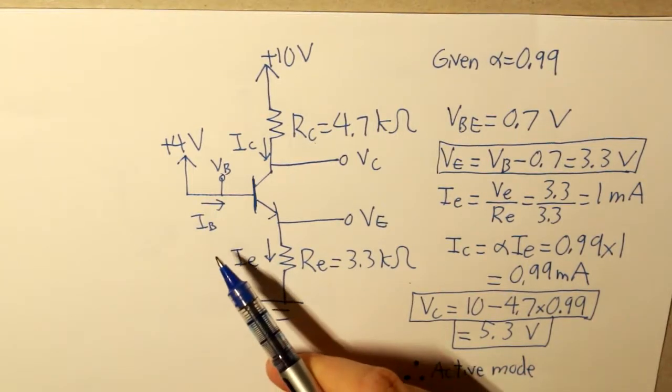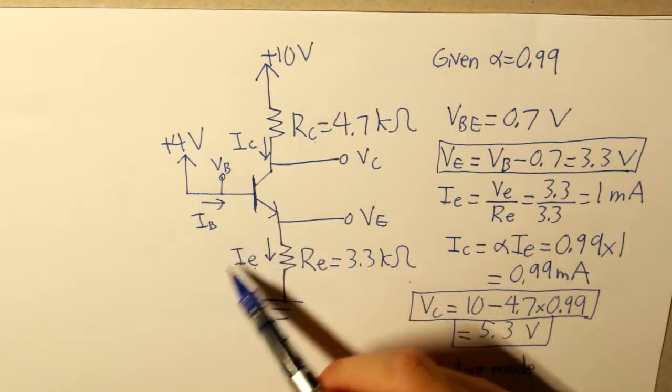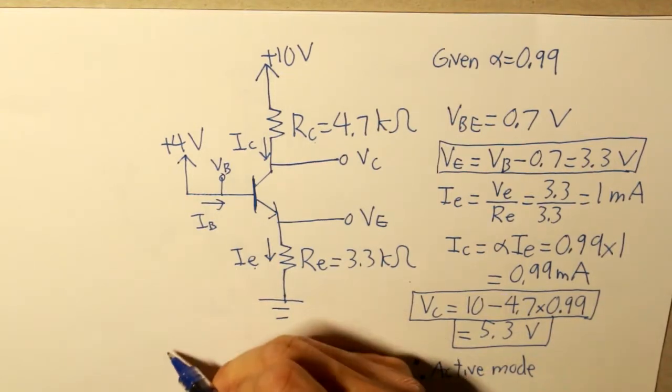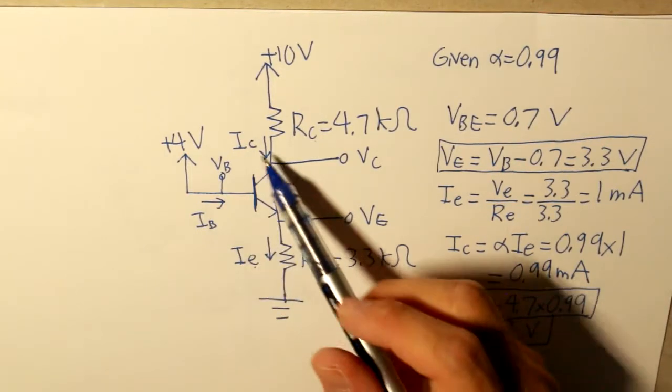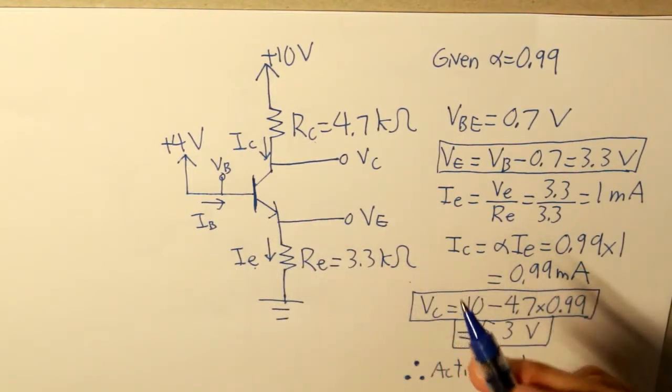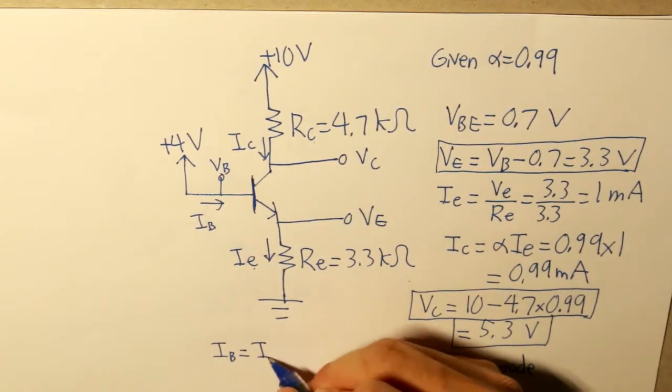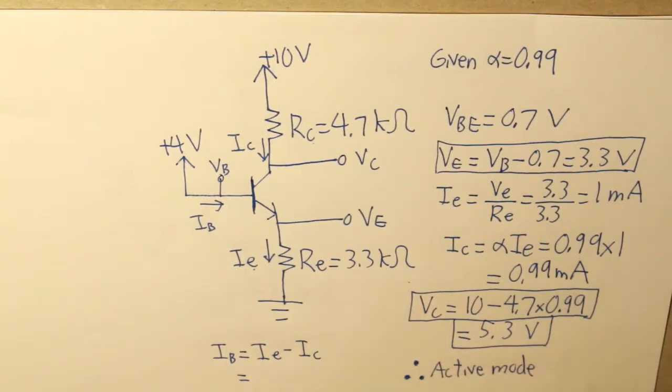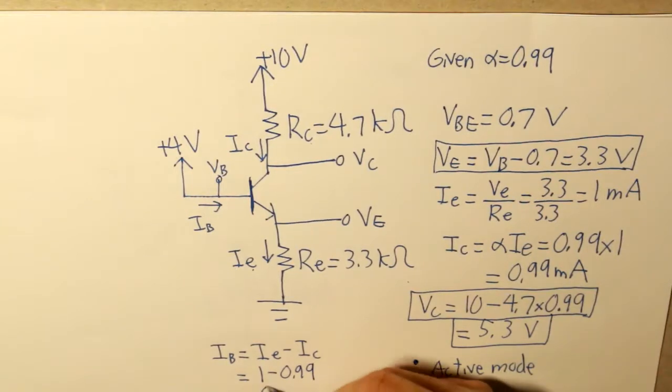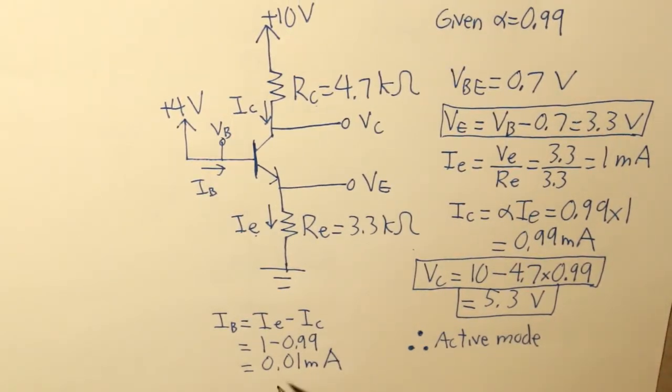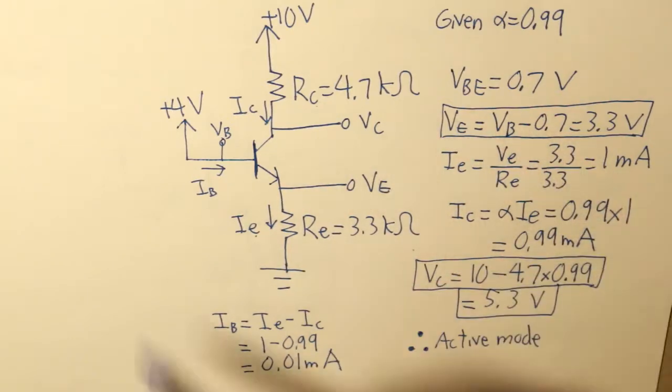And if we want to finish up the entire question, which is to find the base current, well that's simple. Applying KCL to the base current, the collector current, and the emitter current, what we get is Kirchhoff's current law. This is our base current, 0.01 milliamps. So we found out that our BJT is in active mode, and we found all of our values. Let's move on to another example.